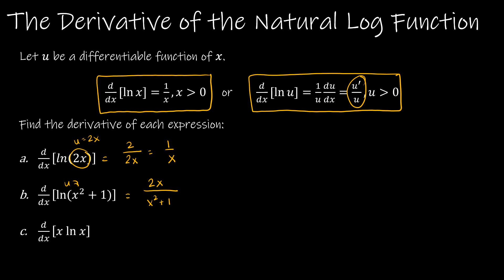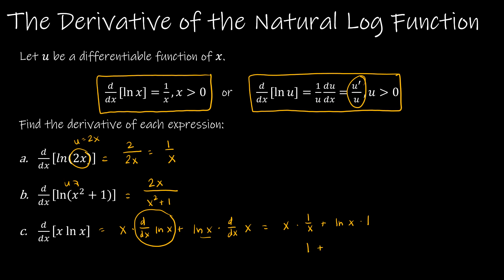For the last one, I have x times the natural log of x, so this one is actually a derivative of a product. When we take the derivative of a product, it's going to be a little more complicated: we take the first times the derivative of the second, plus the second times the derivative of the first — that's the product rule. So here I have x times the derivative of ln(x), which is 1 over x, plus the natural log of x times the derivative of x, which is 1. So x times 1 over x is 1, and ln(x) times 1 is ln(x). So the derivative is 1 plus ln(x).